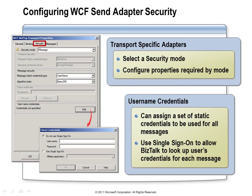With Message security mode selected, the message security section enables you to choose the client credential type and the algorithm suite for encryption and signing. If you change to Transport security mode, you can choose the transport credential type and protection level. With Username selected for message security, clicking the Edit button lets you choose either a static username and password, or Single Sign-On using a particular application to look up credentials based on the ticket on the message being sent.